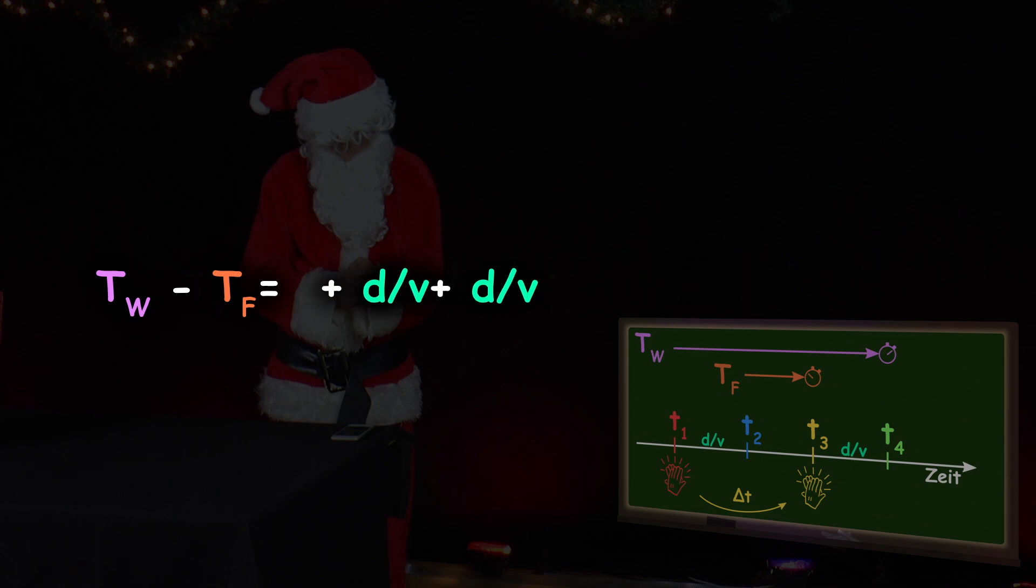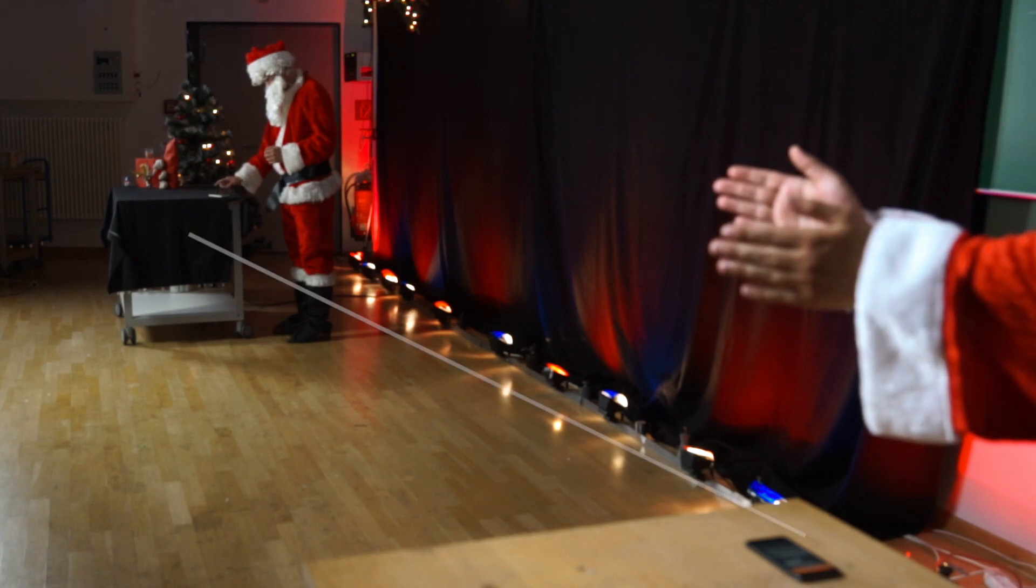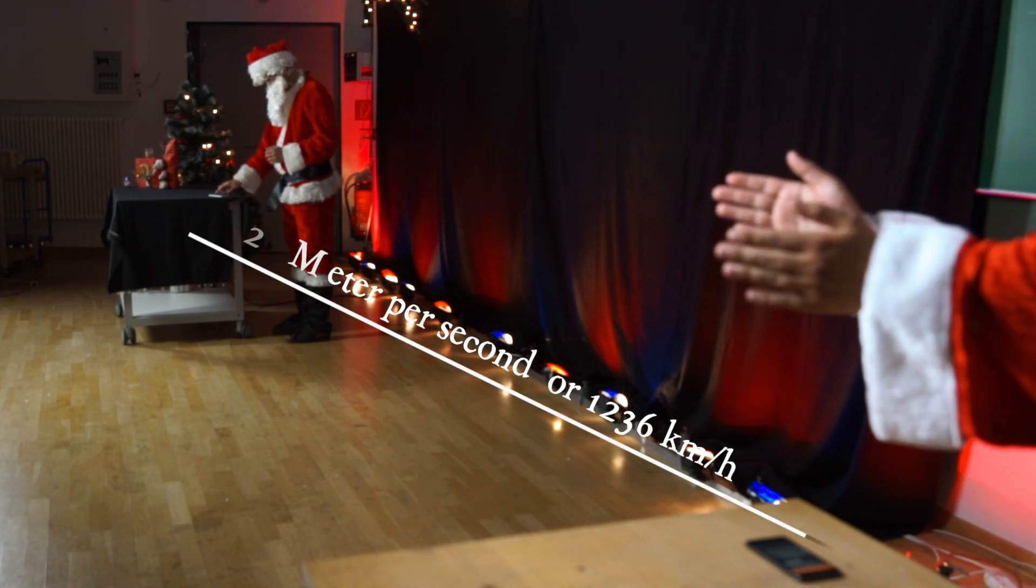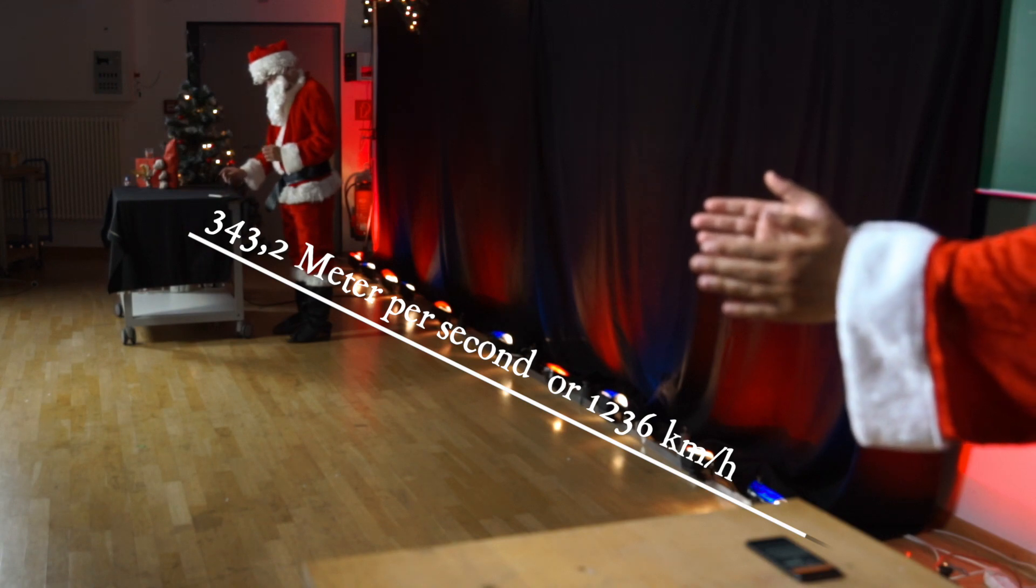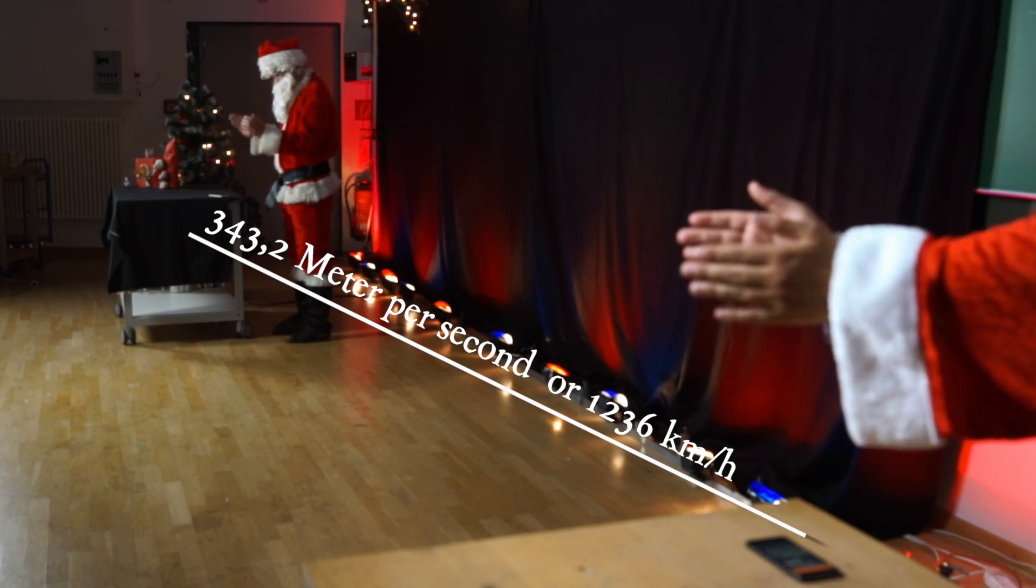The speed of sound can thus be determined from twice the distance between the two friends divided by the difference TW minus TF between the two stop times. V equals 2 times D divided by TW minus TF. The speed of sound in dry air at a temperature of 20 degrees Celsius is 343.2 meters per second, or 1,236 kilometers per hour.